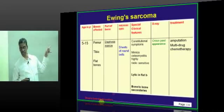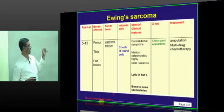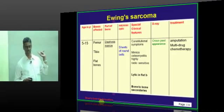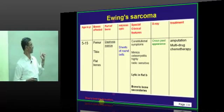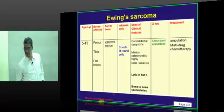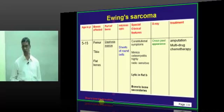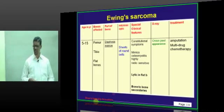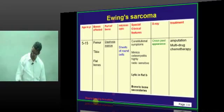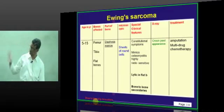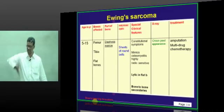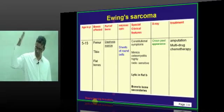Ewing sarcoma occurs in ages 15 to 50, in femur, tibia, and flat bones. Histologically, it shows sheets of round cells, monotonously arranged — sheets where everything looks the same, monotonously boring, with no design variation.